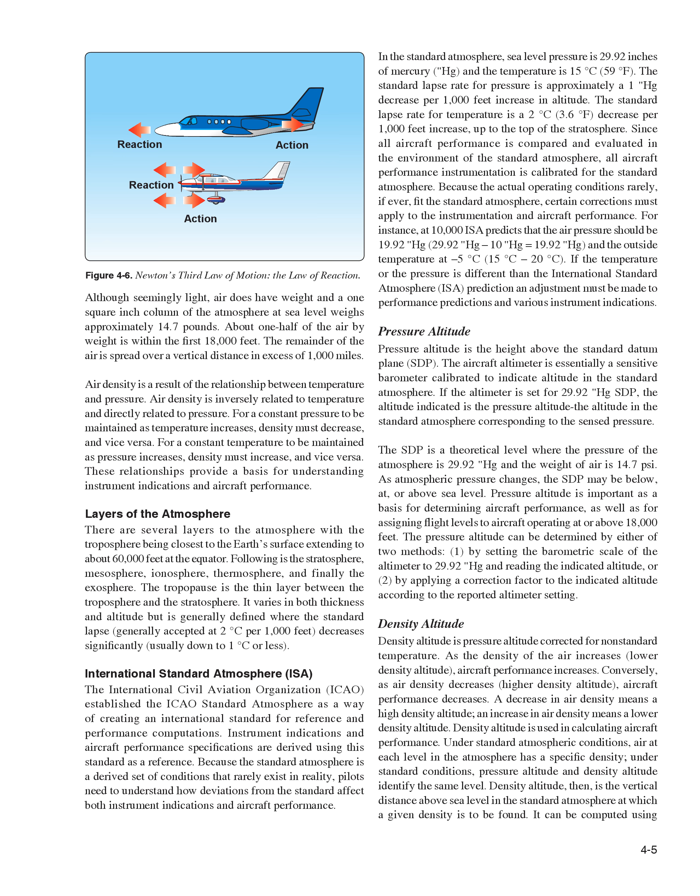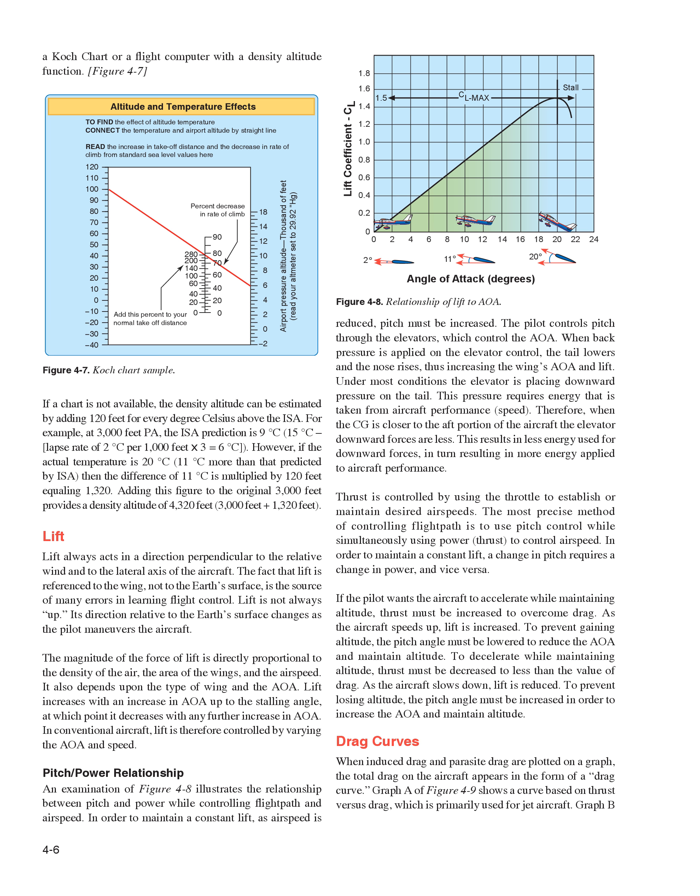Density Altitude. Density altitude is pressure altitude corrected for non-standard temperature. As the density of the air increases (lower density altitude), aircraft performance increases. Conversely, as air density decreases (higher density altitude), aircraft performance decreases. Under standard atmospheric conditions, pressure altitude and density altitude identify the same level. Density altitude is the vertical distance above sea level in the standard atmosphere at which a given density is to be found. It can be computed using a Koch chart or a flight computer with a density altitude function.